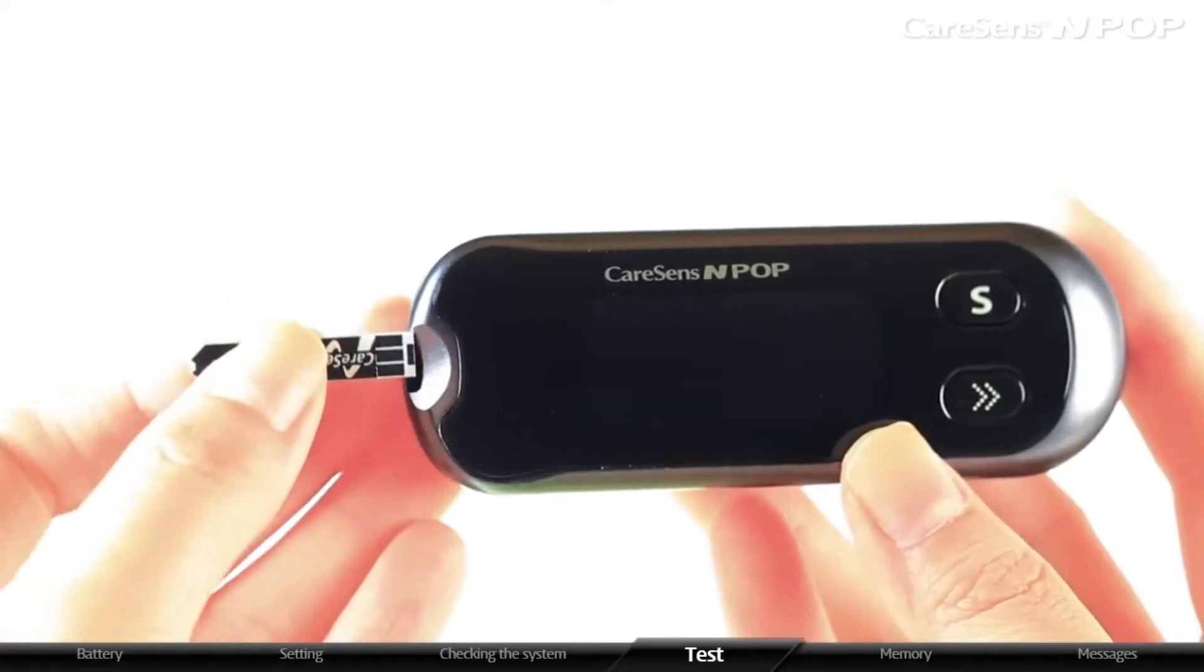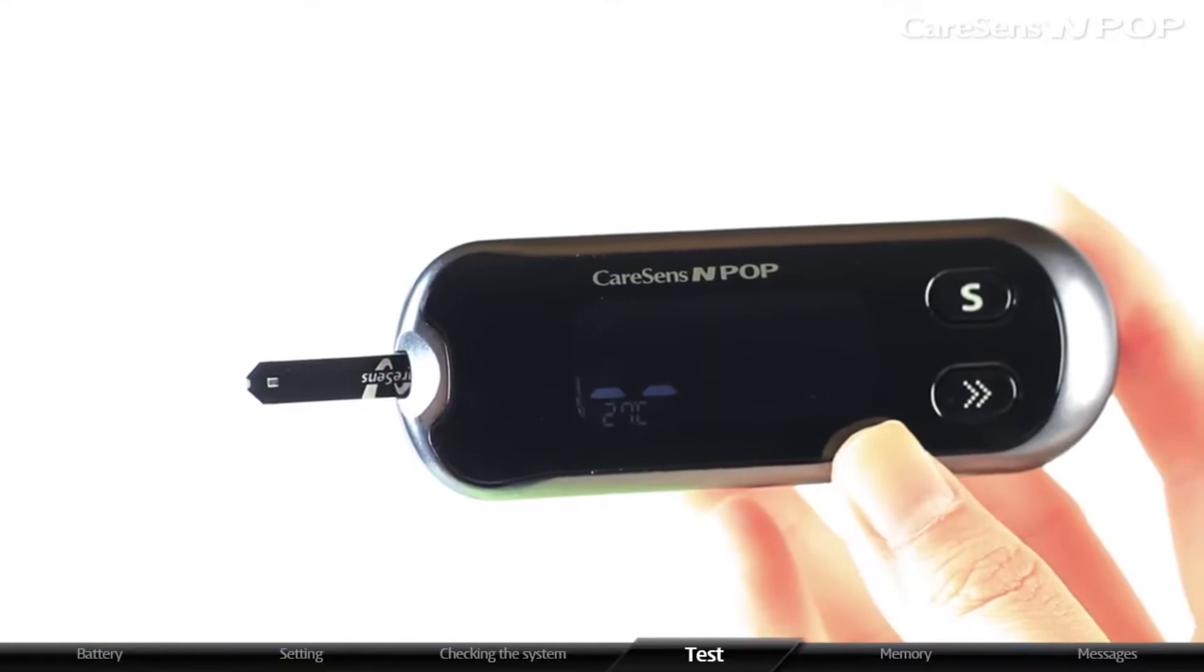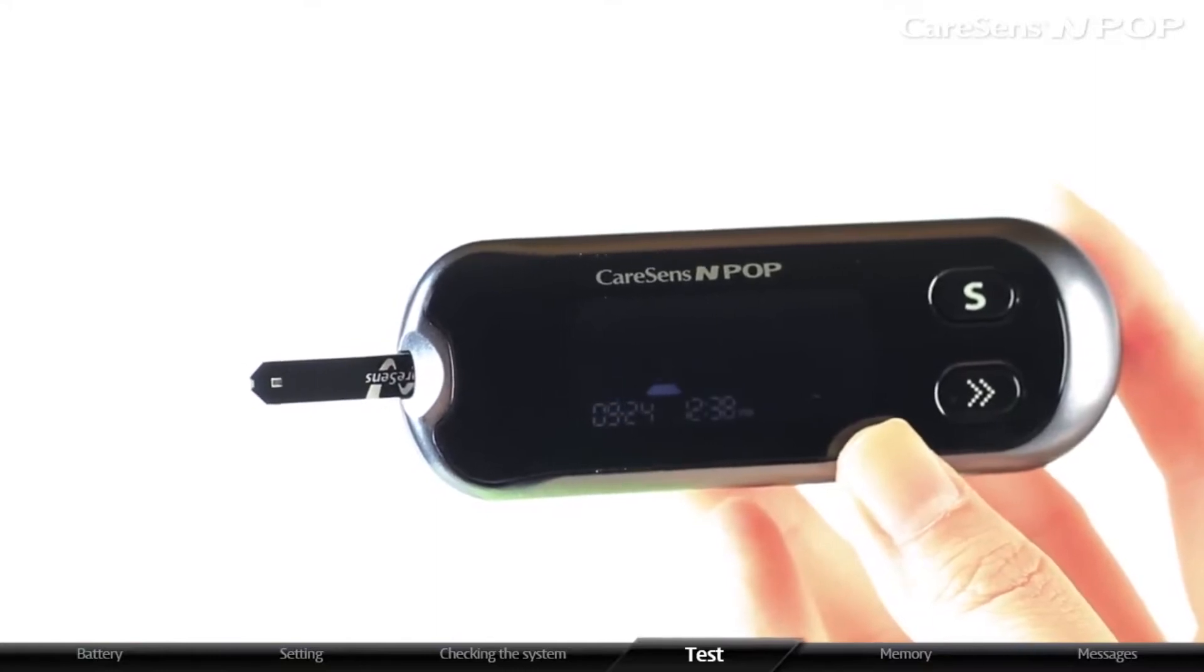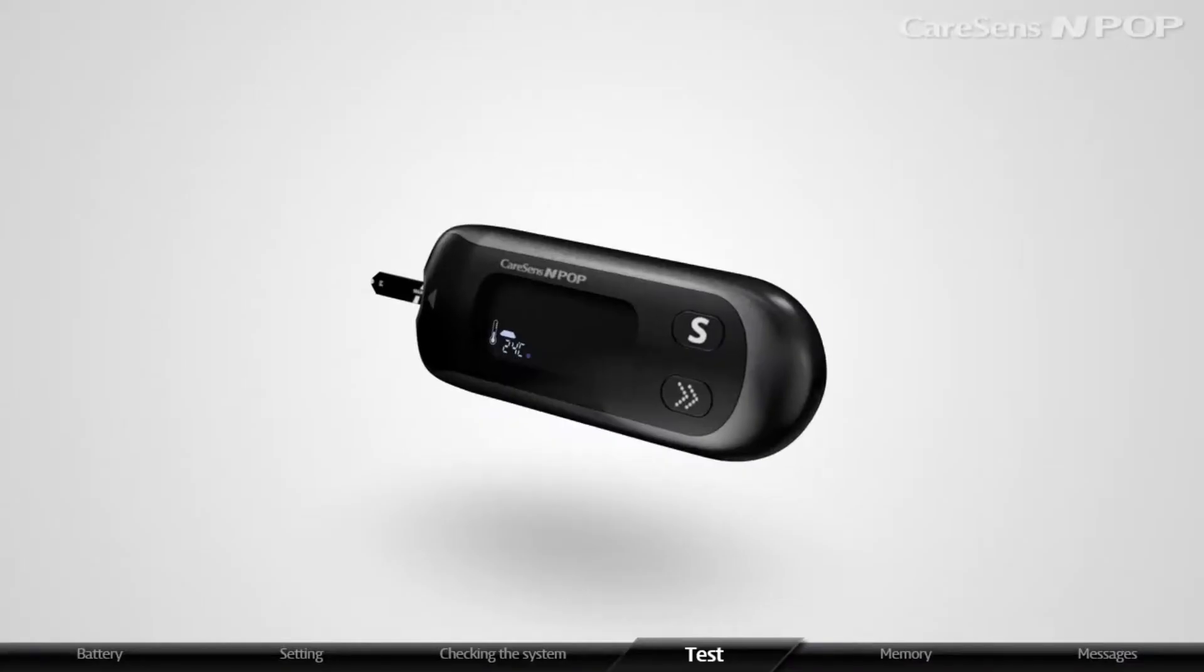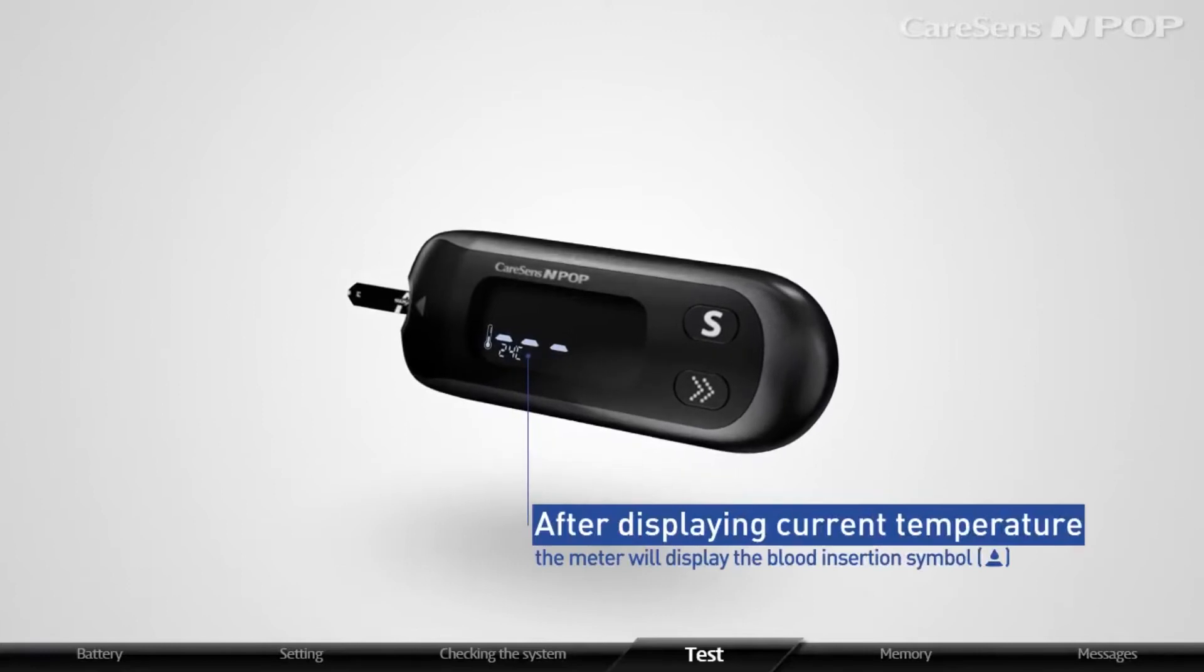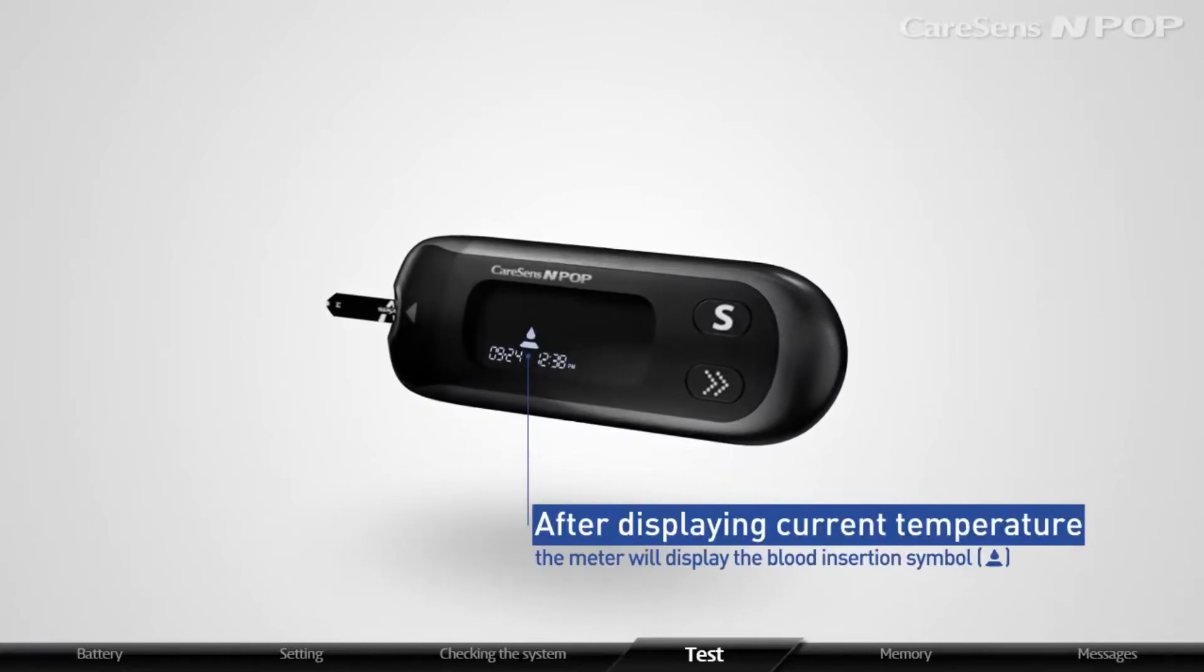Gently insert a test strip with the CareSense N logo facing up until the meter beeps. After displaying current temperature, the meter will display the blood insertion symbol.